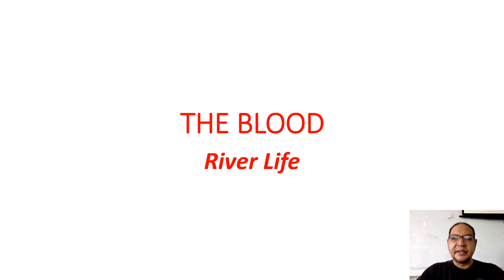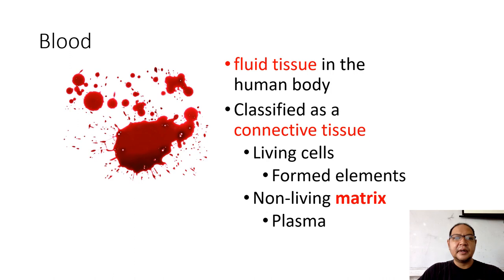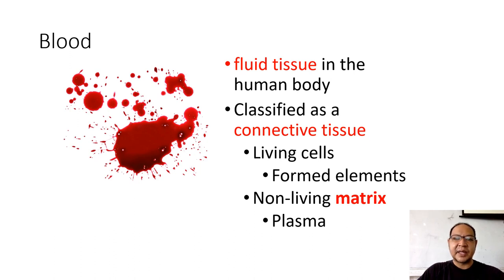Today our topic is the blood, which is called the river of life. The blood is called the river of life because it contains materials or substances needed for the body, tissues, and cells to live and maintain life. The blood is the fluid tissue in the human body, but if exposed to air it becomes solid. It is classified as connective tissue — but why?